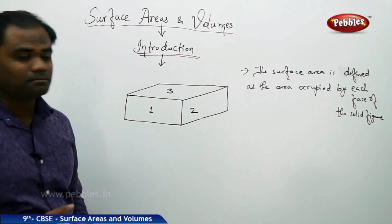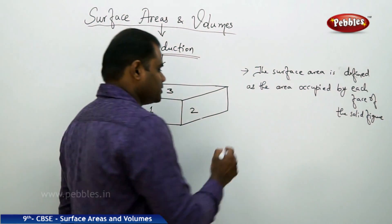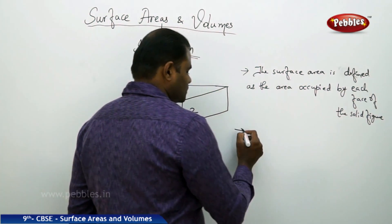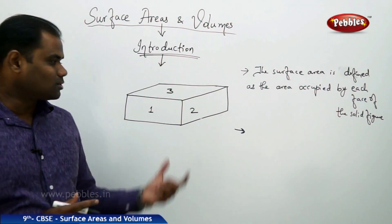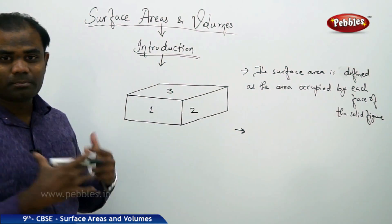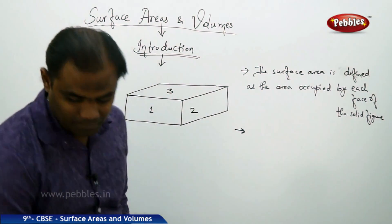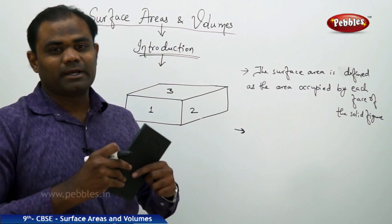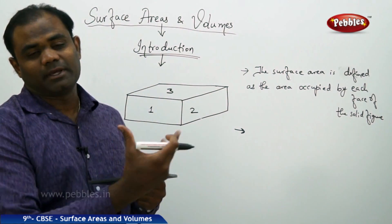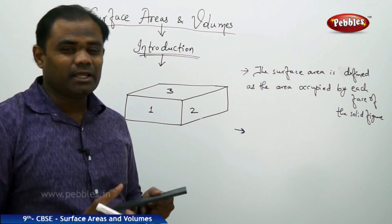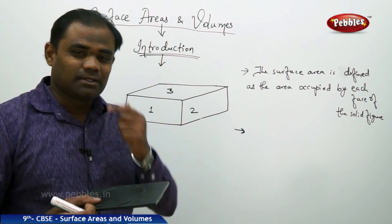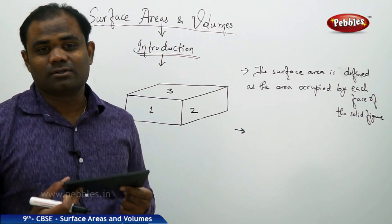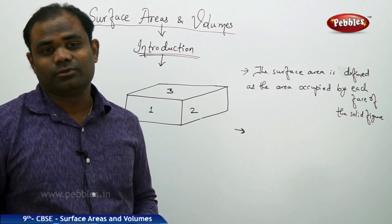What is the volume? In a general sense, this object occupies some space. Any object in the universe which occupies space — that measure of space is called the volume.